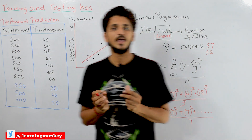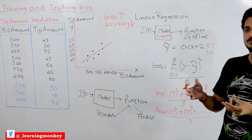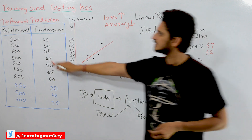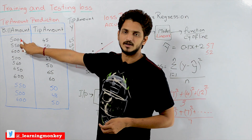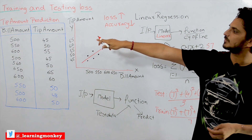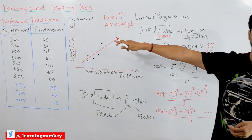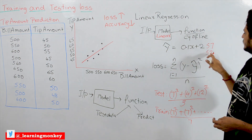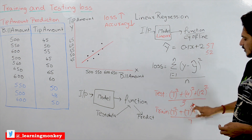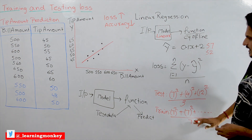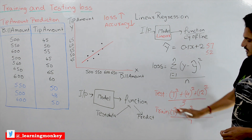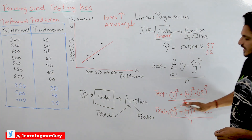In the same way, calculate the loss on training data. Take the first training point: bill amount of 500, predicted value is 52, actual tip amount given is 45. So 45 − 52 = 7, giving 7². For the second training point, also 7², and so on for all training points, divided by 7 — the total number of training data points. This is how we calculate training loss and testing loss.